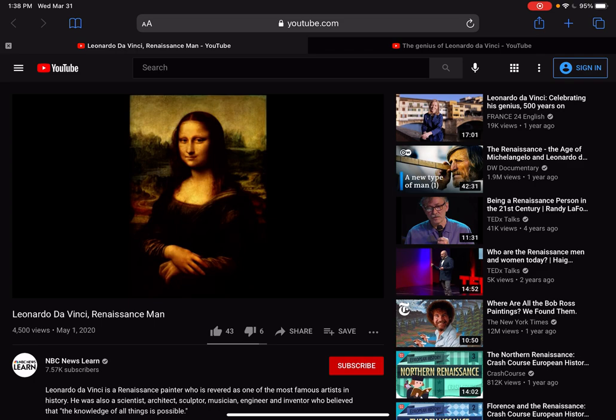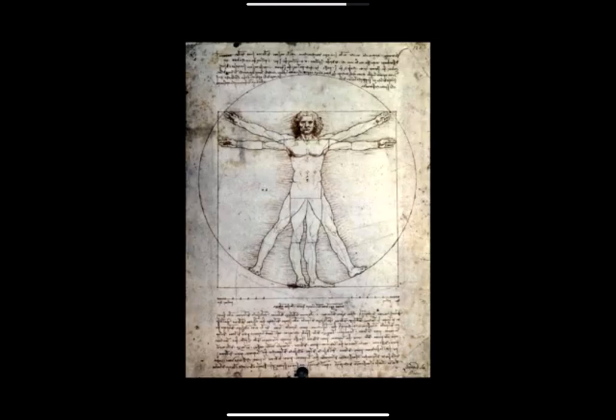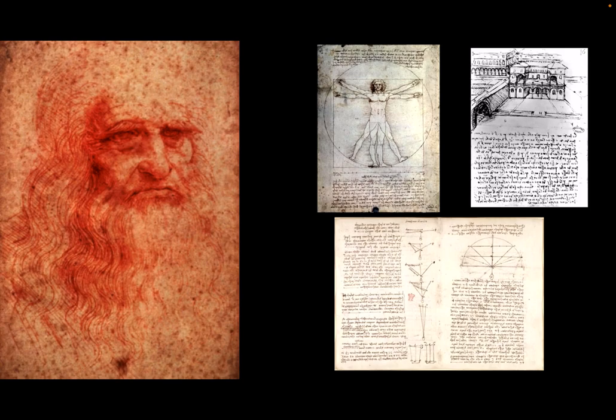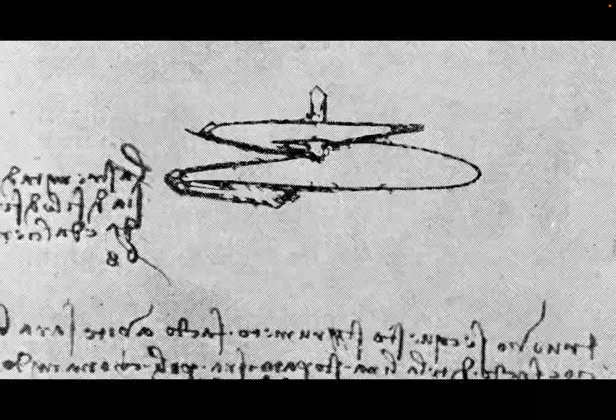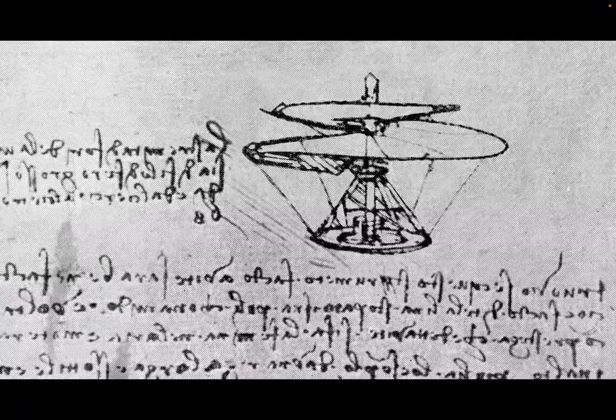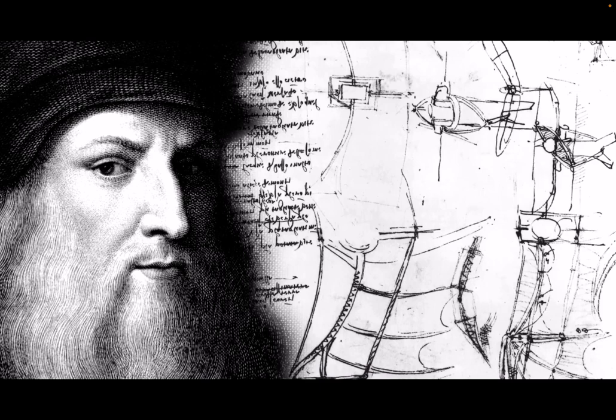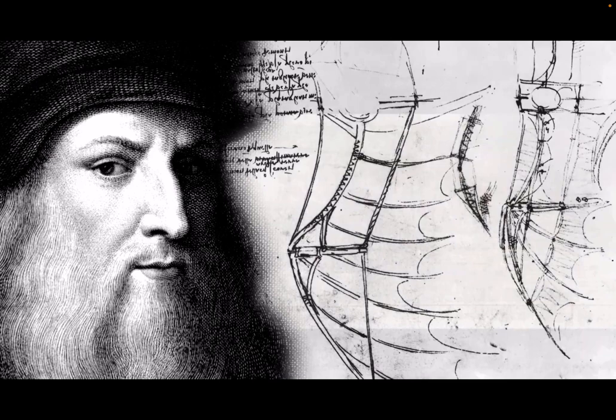Let's watch these short videos — hopefully they're not blocked. The Mona Lisa, The Last Supper, The Vitruvian Man — just a few of the iconic works that made Leonardo da Vinci one of the most famous artists in history. But da Vinci was also a scientist, architect, sculptor, musician, engineer, and inventor who once said, 'the knowledge of all things is possible.' His boundless curiosity and achievements are the reasons da Vinci is still recognized as the ideal Renaissance Man.